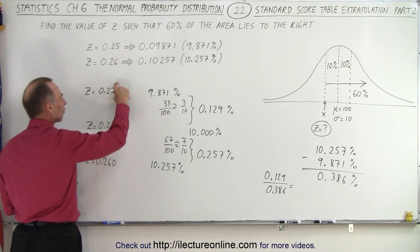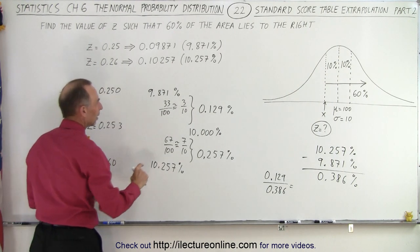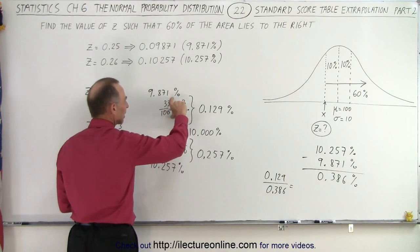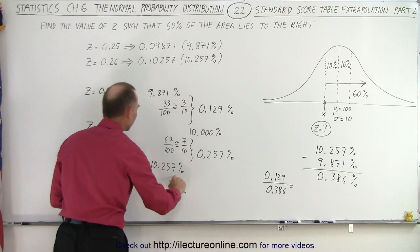3, of course, is 3 tenths from 50 to 60, and so going from here to 10% is about 3 tenths the way of going from there to there.